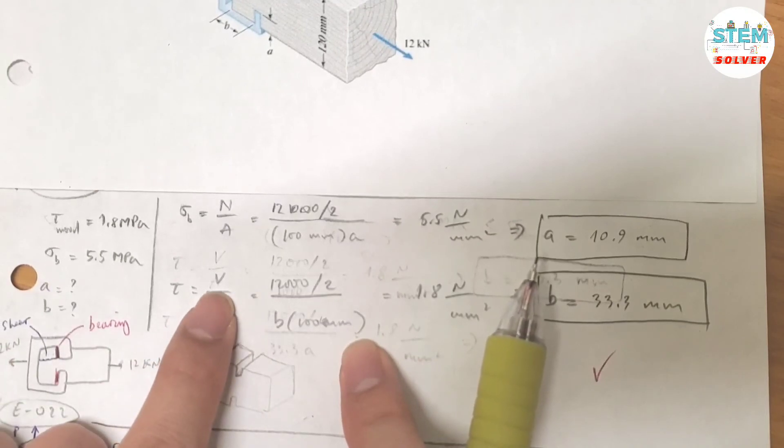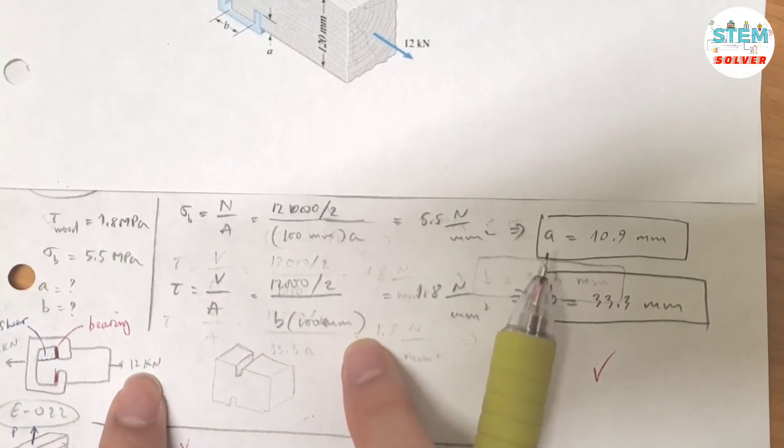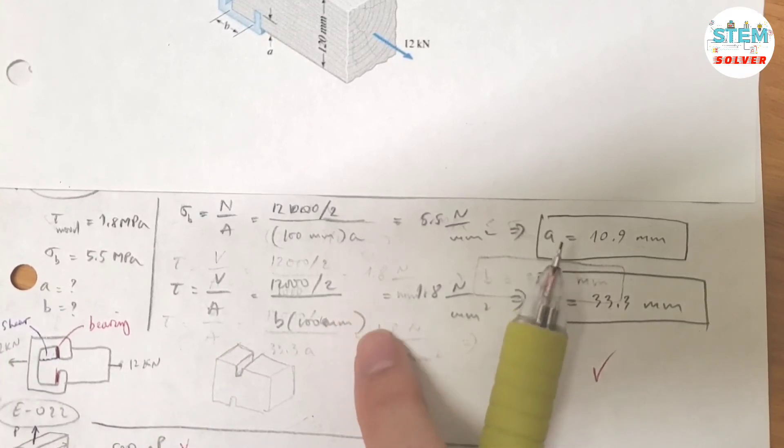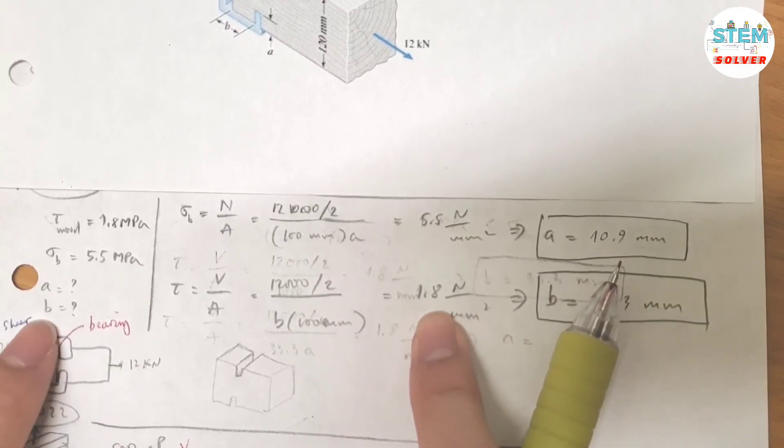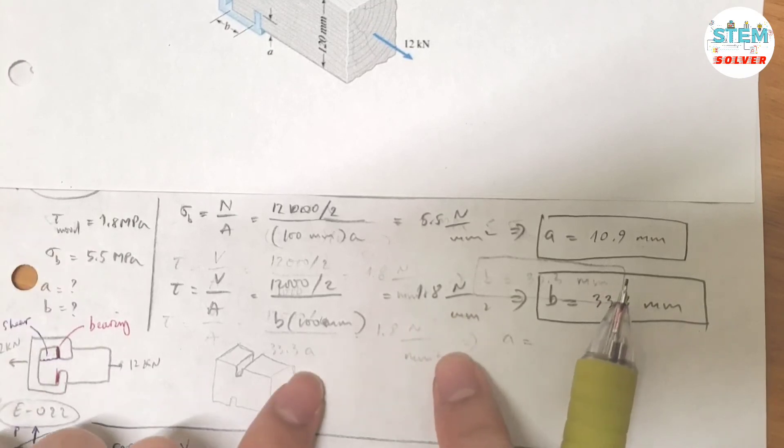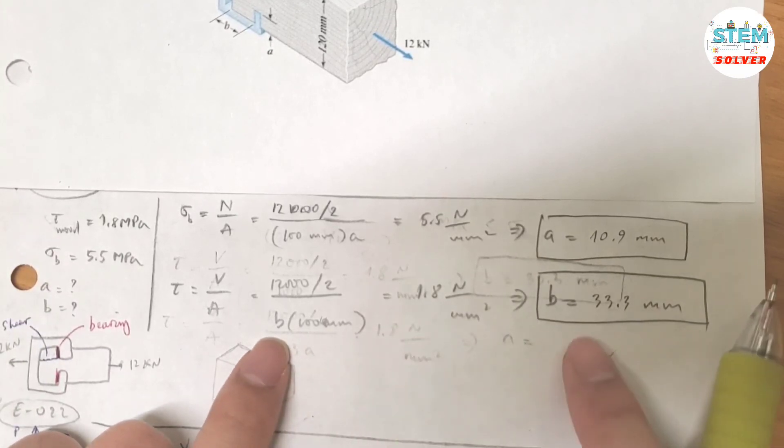And what is the shear force? Again, the force is 13,000 N. You have one on top and one on the bottom, so that's why I divided it into 2. And set this expression equal to 1.8 as it is the maximum allowable shear stress. Rearrange this one, and you would get B equals 33.3 mm.